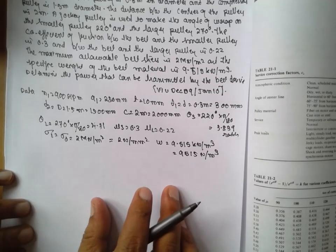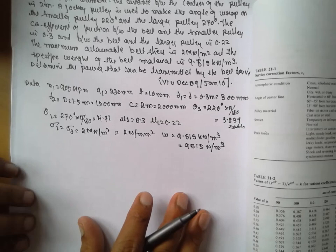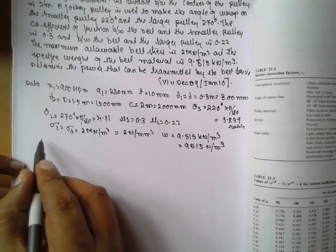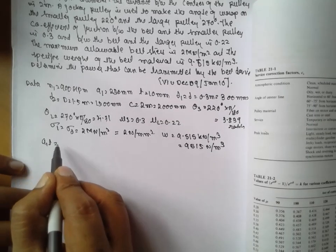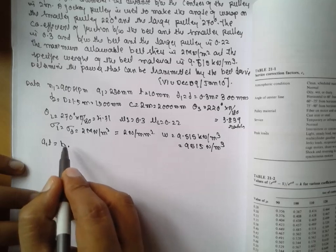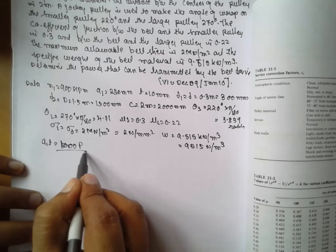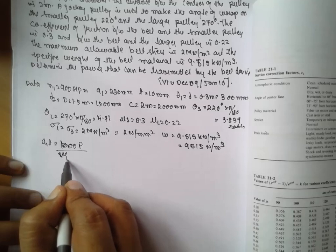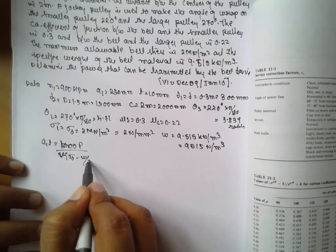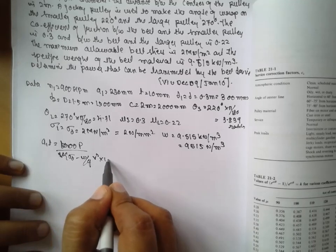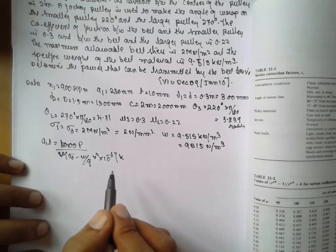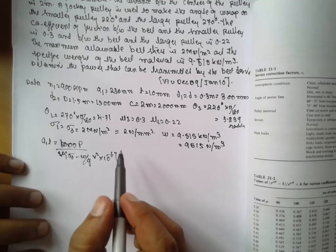We have to find out the power. Formula remains same. Formula will be a1 times t equals 1000P divided by V times sigma D minus W by g times V squared into 10 raised to minus 6 into K.